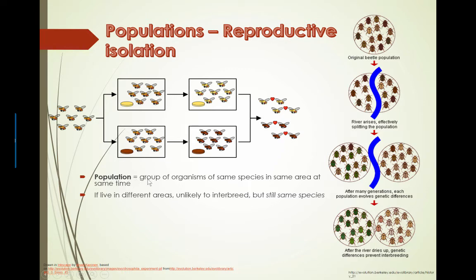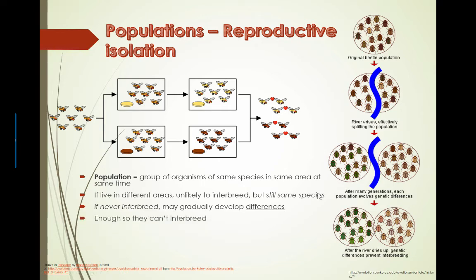A population — this is review — is a group of organisms of the same species living in the same area at the same time. If they live in different areas, they're unlikely to interbreed, but because they're still the same species, you could potentially bring them back together and still reproduce. But if they're separated for long enough, they may not be able to interbreed and gradually start to develop differences through mutations or sexual reproduction and changes in their actual genomes overall, enough so that they can't actually interbreed when brought back together.